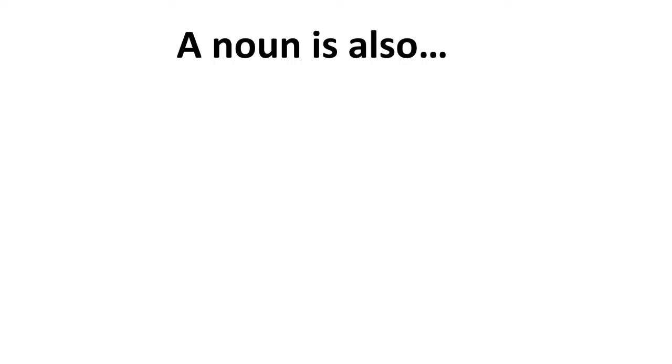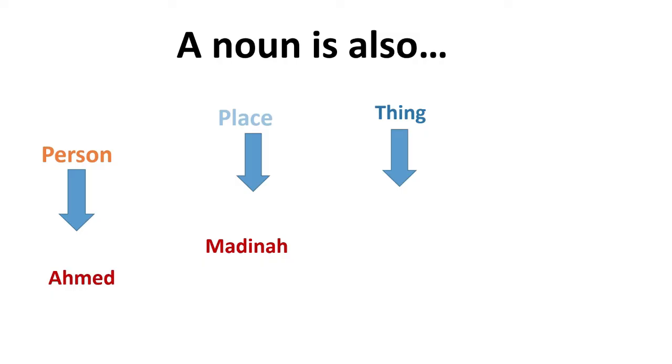A noun is also a person, like Ahmed, or a place, like Medina, or a thing, like car, or an idea, like dream.